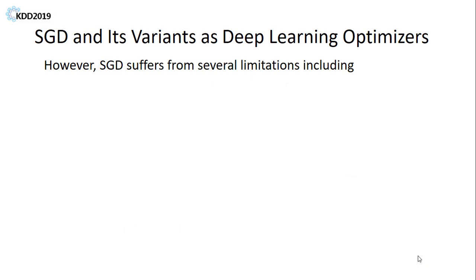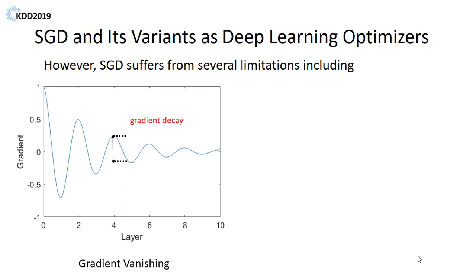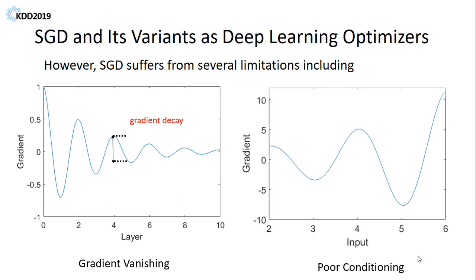However, SGD has several limitations that prevent it from further use, including gradient vanishing, which means the gradient signal decays as it's transmitted among layers, and poor conditioning, which means the gradient changes rapidly with a slight perturbation of input.